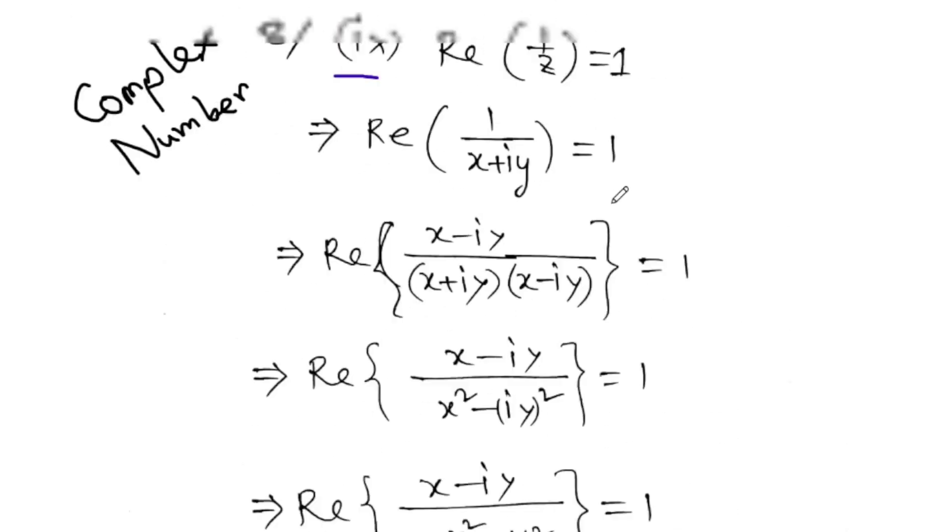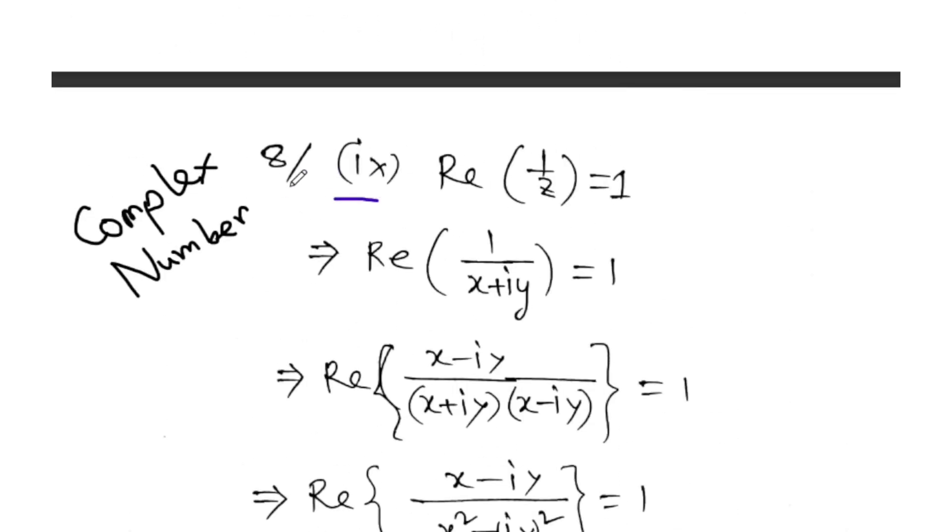So let's get into this. The IX numbers problem states: the real part of one by Z is equal to one. The complex number Z, what is it? Let me show you.